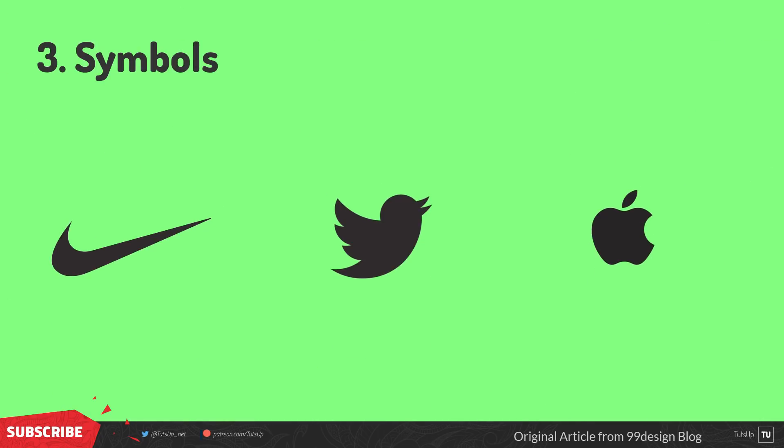Third we have the Symbols logo type. The biggest thing to consider when deciding to go with a Symbol mark is what image to choose. This is something that will stick with your company its entire existence. When you see these logos, the mark alone is instantly recognizable, and this shows how iconic these companies are with only their logo.